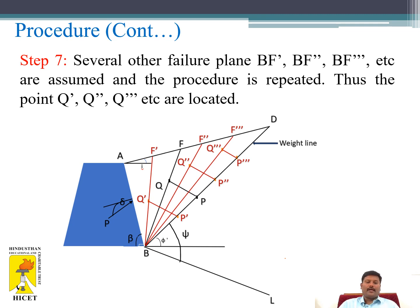For example, another failure plane BF' is assumed. The weight of the soil wedge ABF' is plotted on line BD, giving point P'. Then draw a line P'Q' parallel to BL. It intersects the failure plane BF' at point Q'.